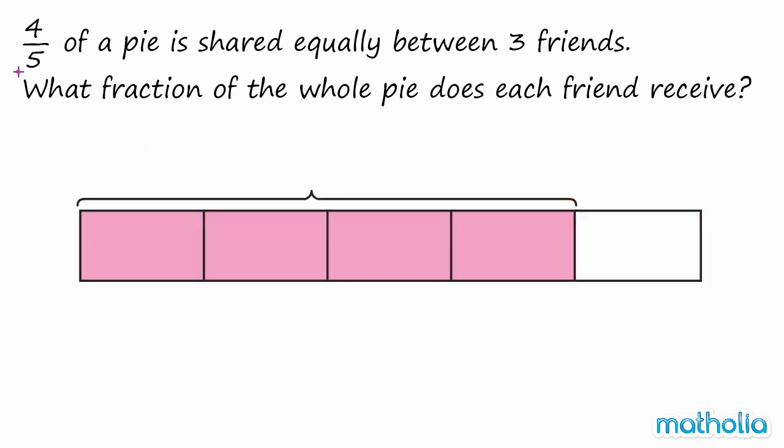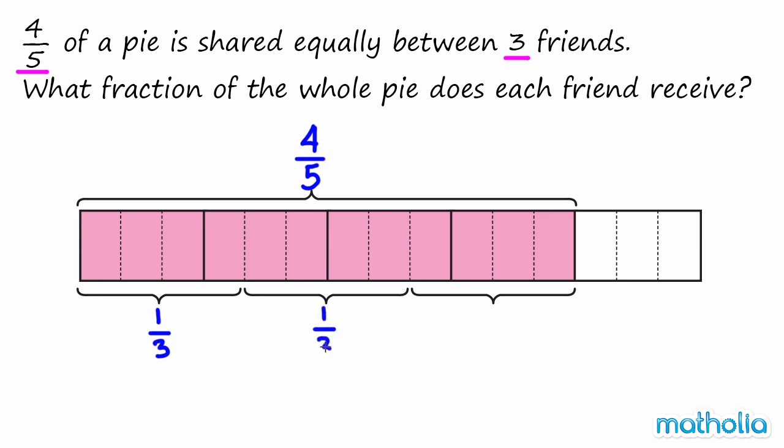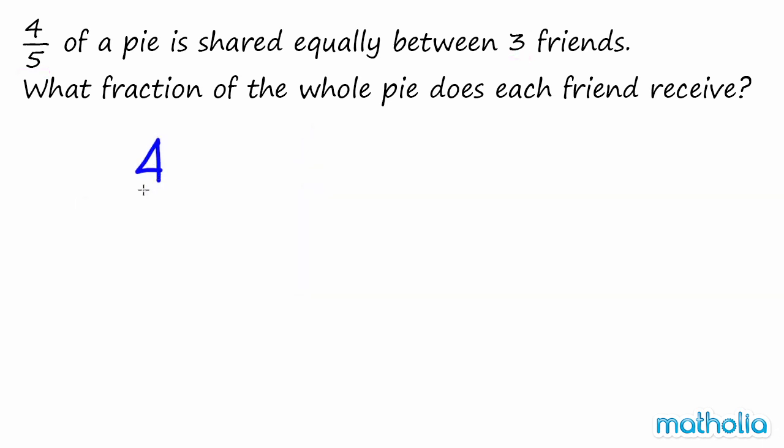We know in the beginning there is 4 fifths of a whole pie, and we know the pie must be shared equally between three friends. So each friend receives 1 third of 4 fifths. To find the fraction of pie that each friend receives, we need to divide 4 fifths by 3.